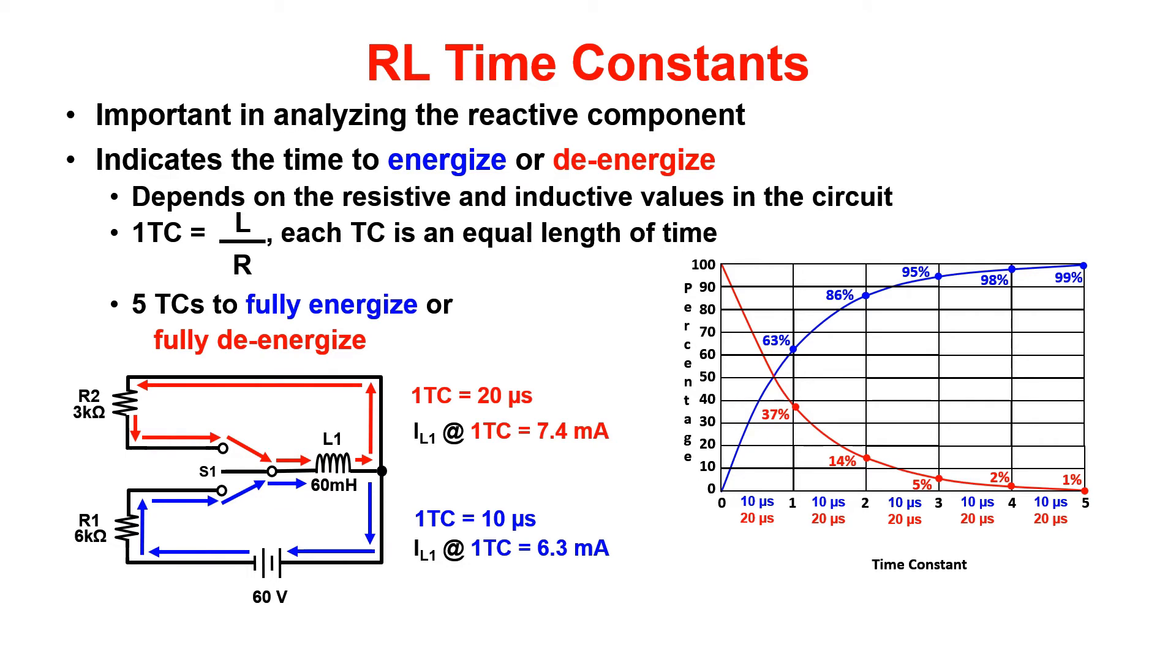In the example, 60 milli divided by 6k gives us 10 microseconds. To find the level of current growth, we then calculate IT.